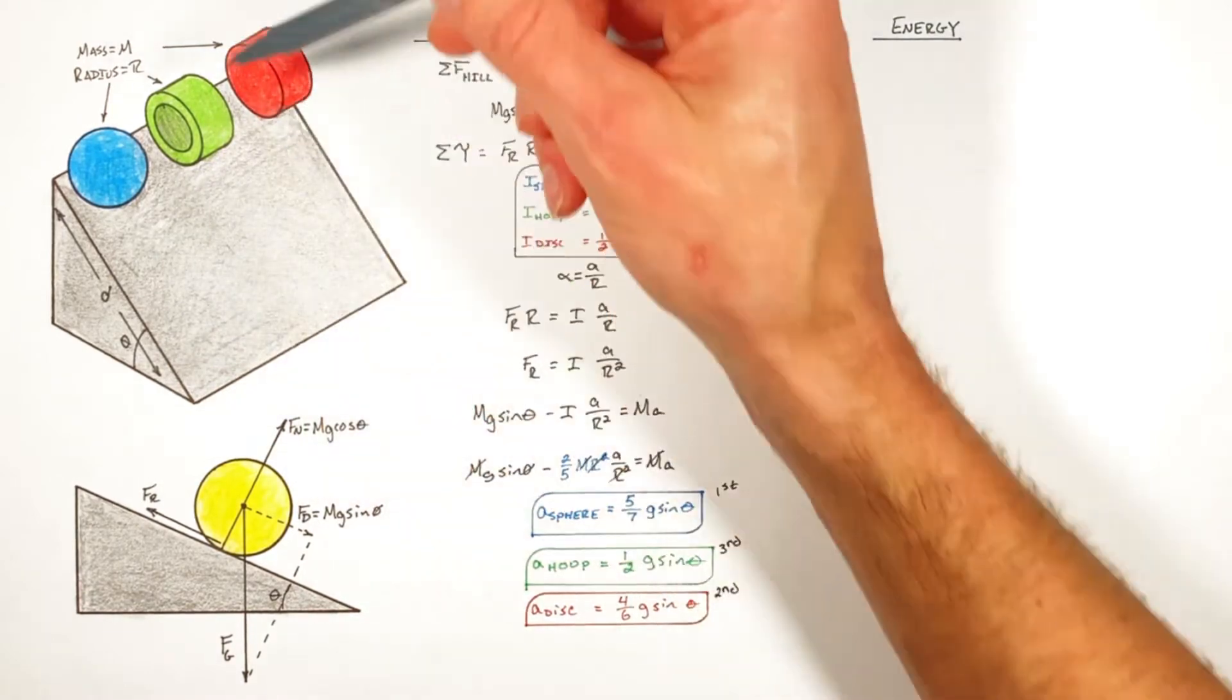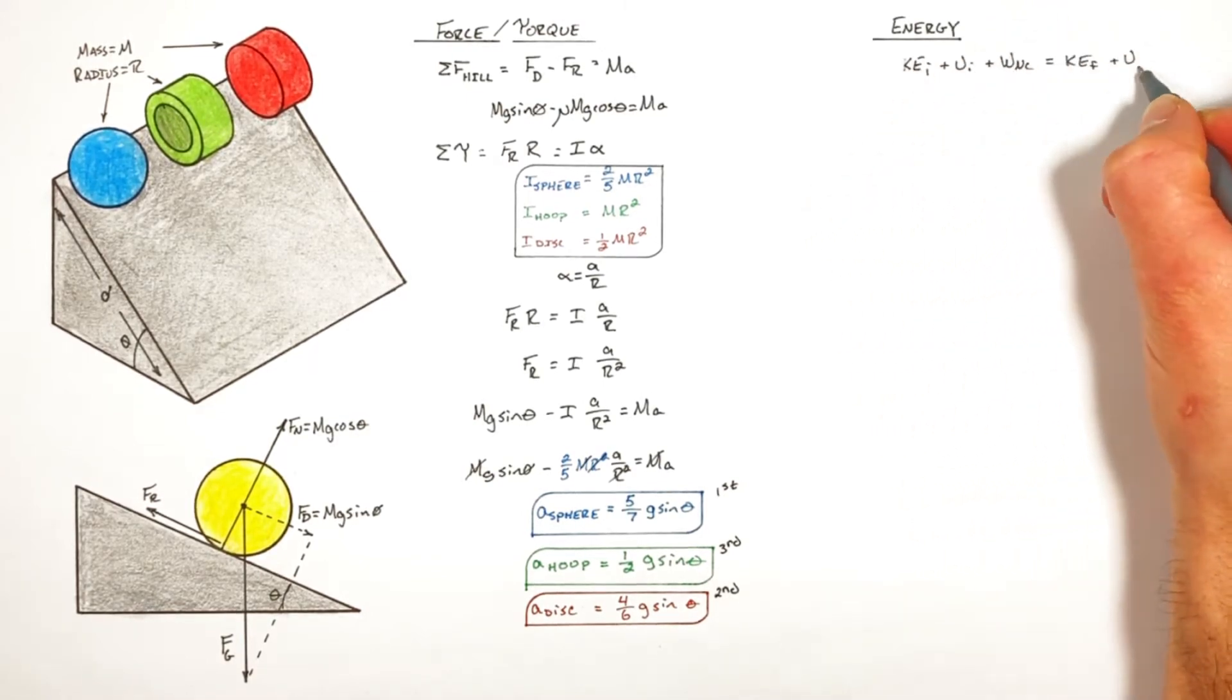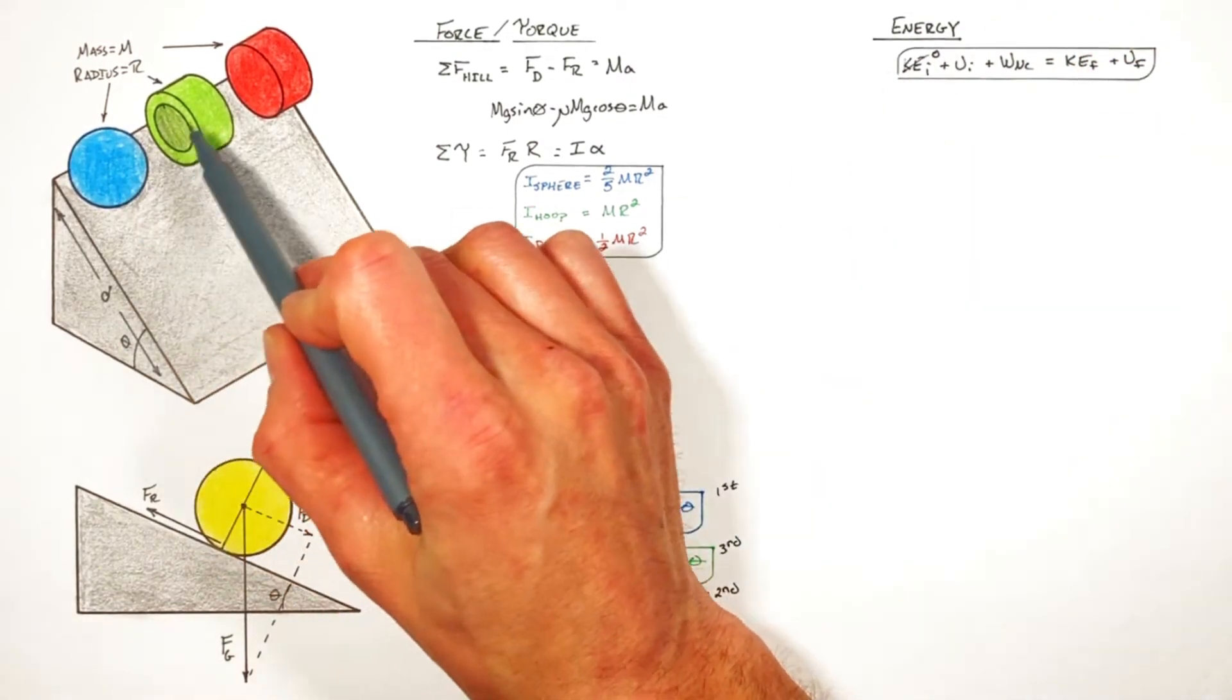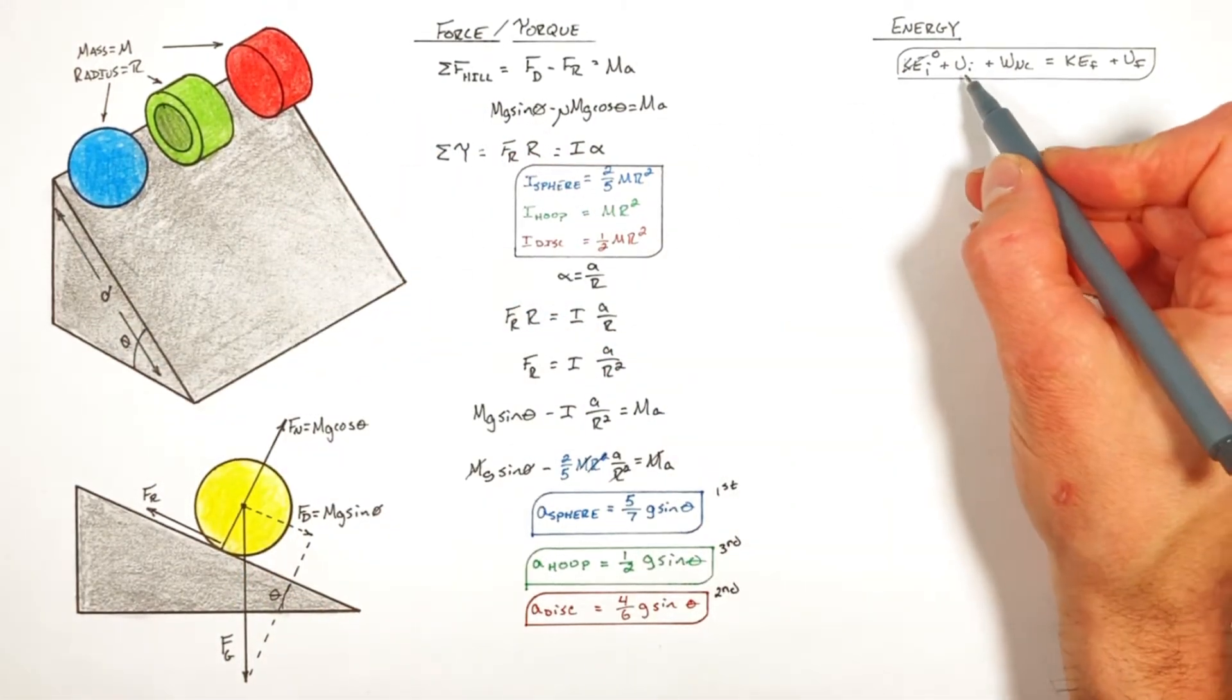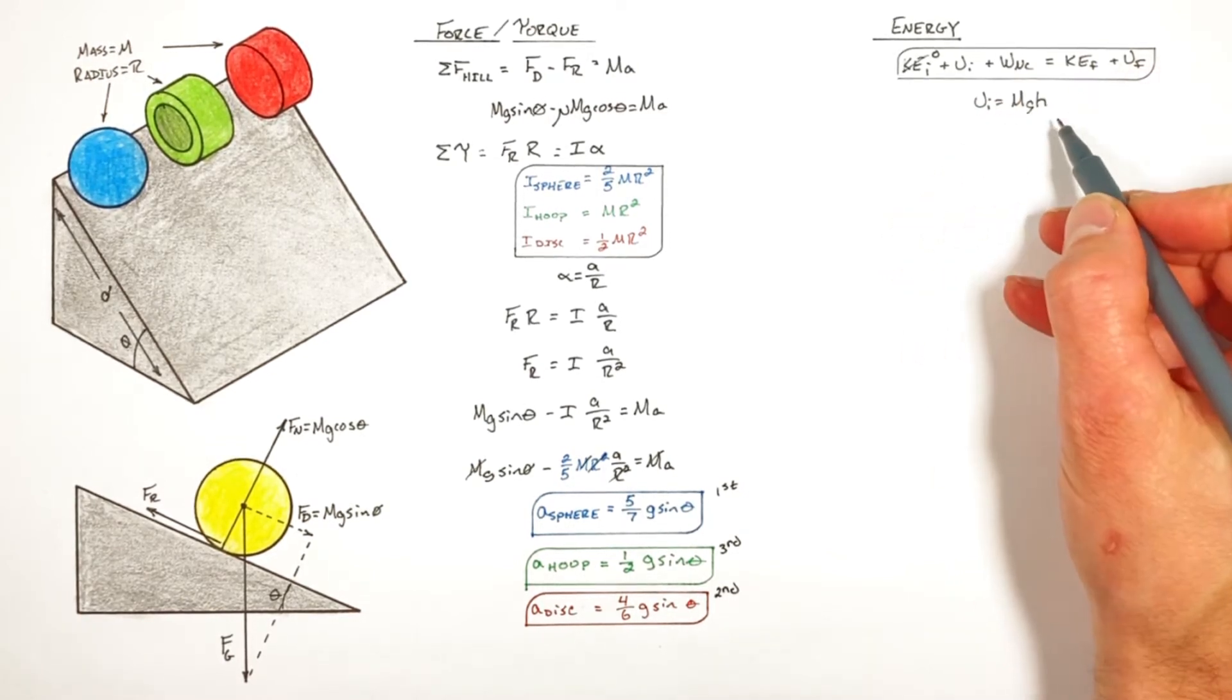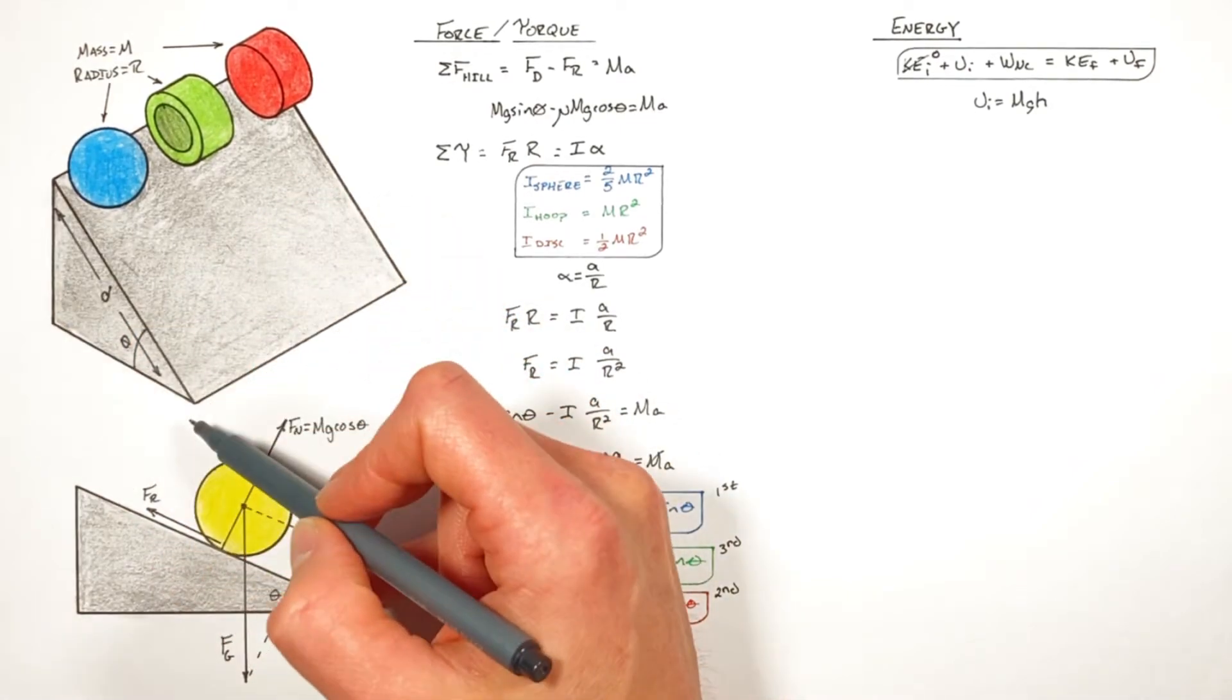So we're going to start with the conservation of energy. Each of these objects is going to start at rest, which means the initial kinetic energy is zero. Now all three of these objects are starting some distance, we're going to say d up this hill, which means they have some initial gravitational potential energy. We know gravitational potential energy is given by mgh, where h is the height. If you look at this triangle, which you'll see is the height of the wedge or ramp, is going to be given by d sine theta.